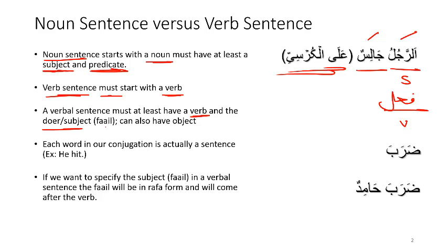The doer can be called the subject. In Arabic, the doer is called the Fa'il — the Fa'il is the doer of the action. In some cases, we can also have the object, which is the entity on which the action is happening. We will talk about objects in a verbal sentence in one of our subsequent lessons.